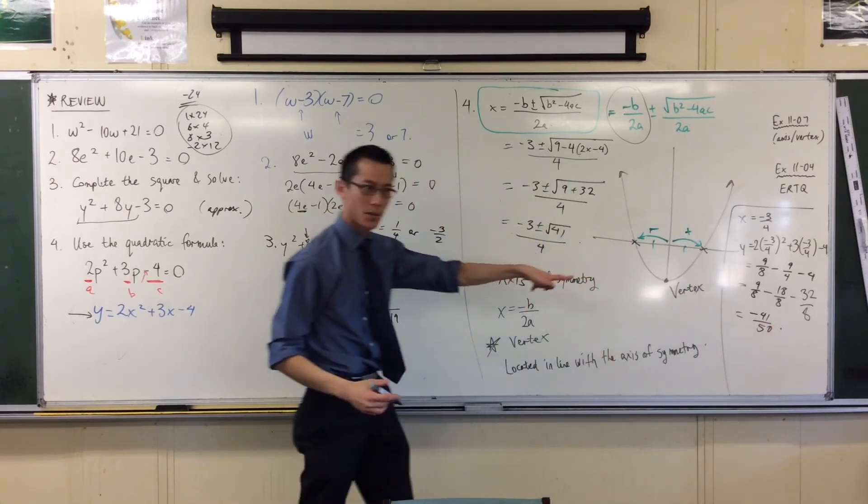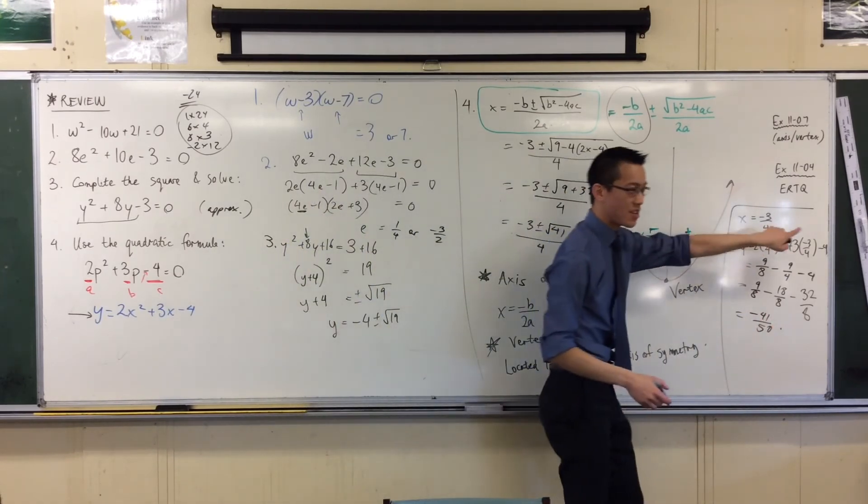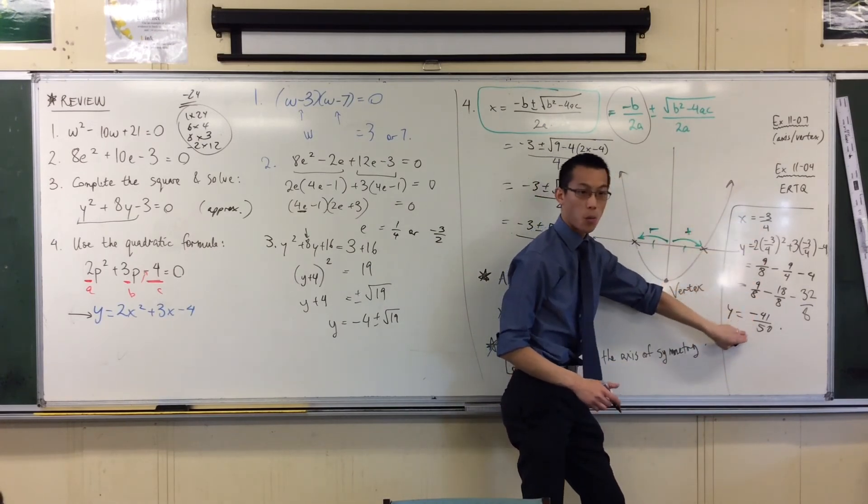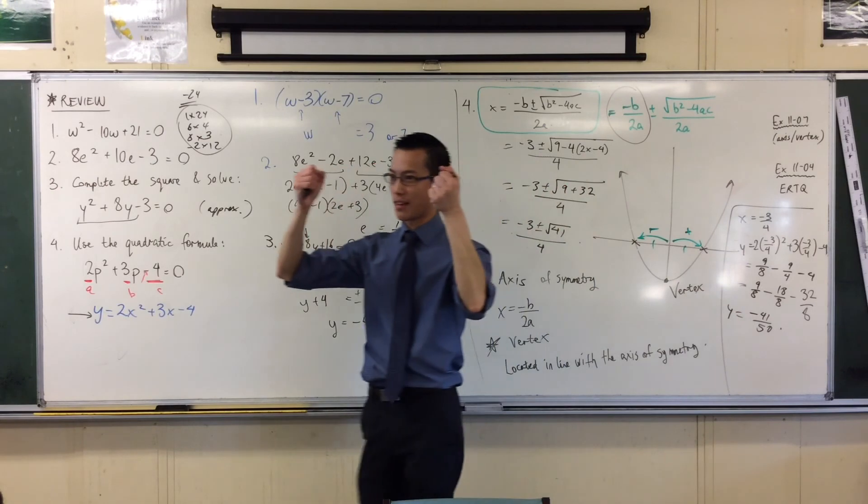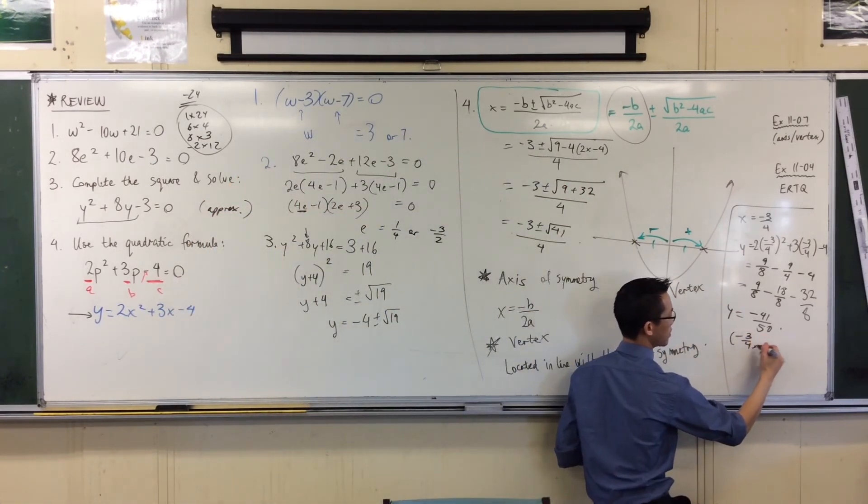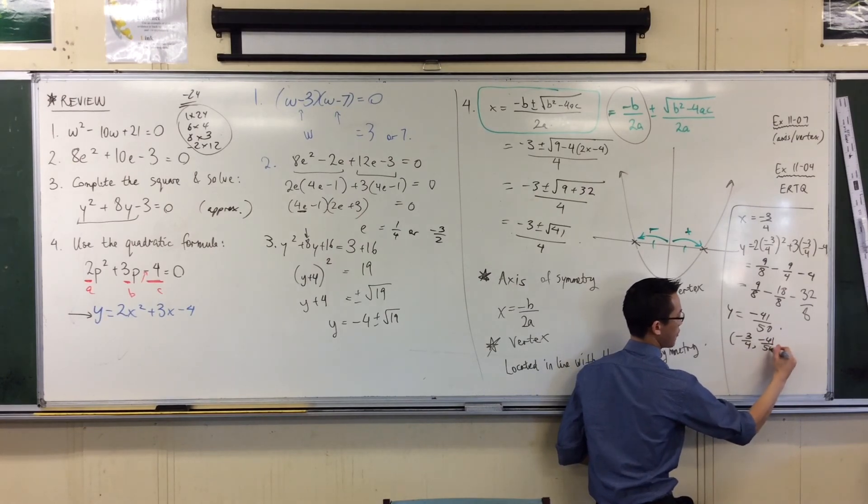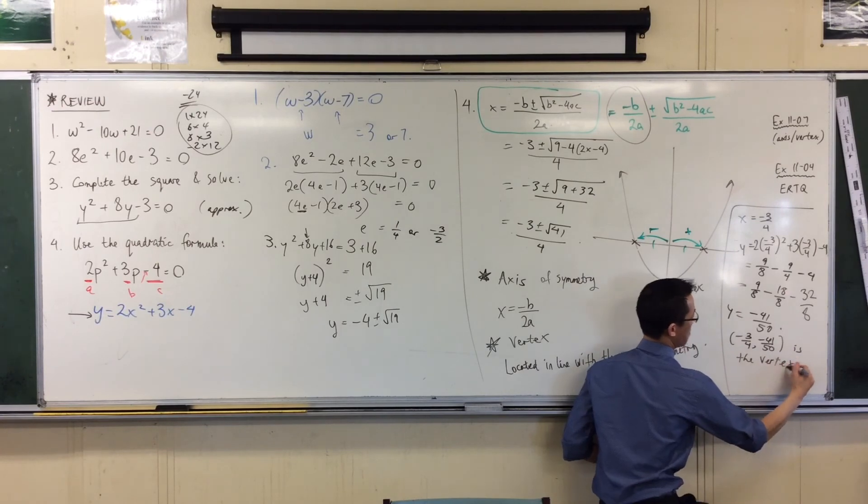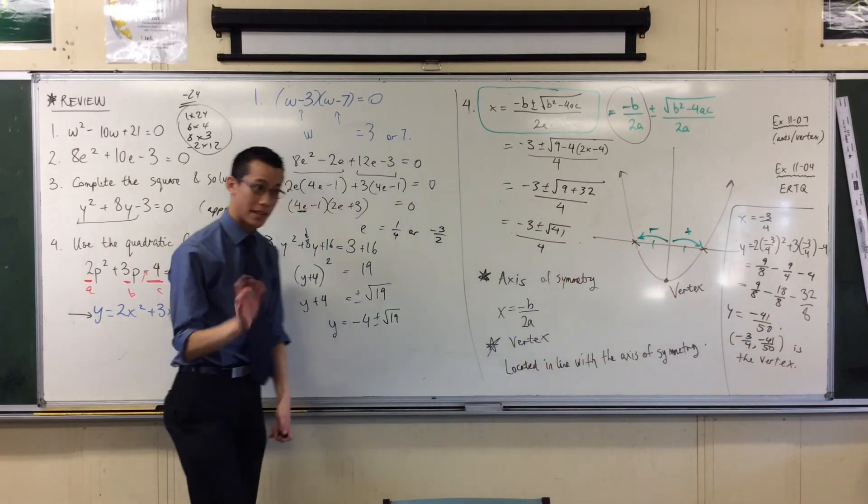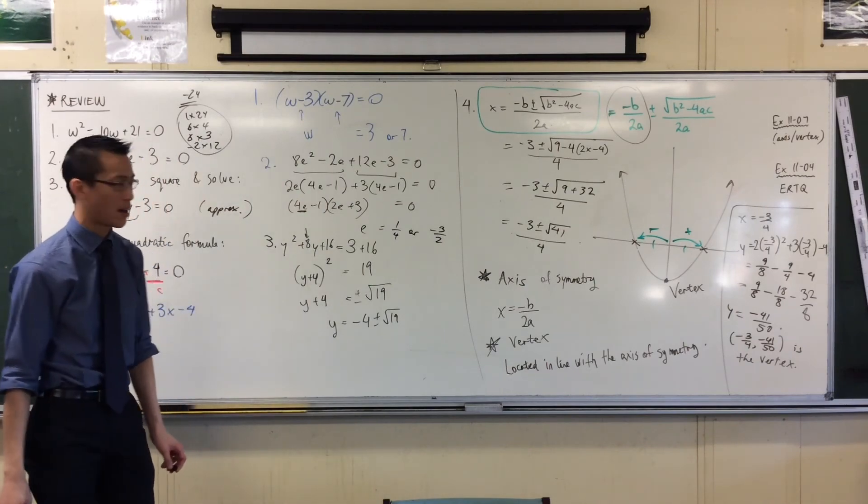So what is this? It's y equals this. So I've got an x. I've got a y. This is a pair of coordinates. So now I can put these together. Minus 3 quarters, minus 41 over 8. And that is where that vertex is. That bottom point there. So I could graph this now if I wanted to, but that's something we'll focus a bit more on Thursday.